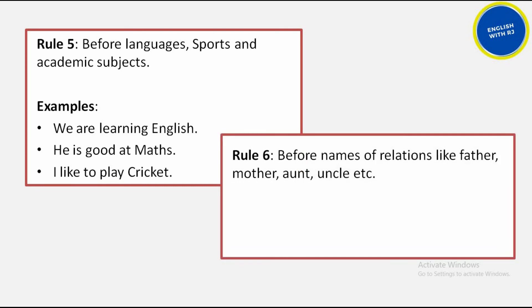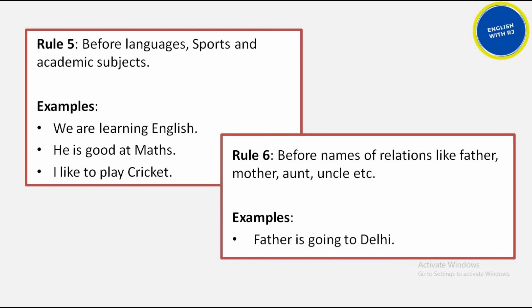Rule number 6 is about relationships. When talking about family relationships — mother, father, sister, brother — no article is used. For example, 'Father is going to Delhi' or 'My father is going to Delhi' — both are correct. But saying 'The father is going to Delhi' or 'A father is going to Delhi' in this context is wrong.